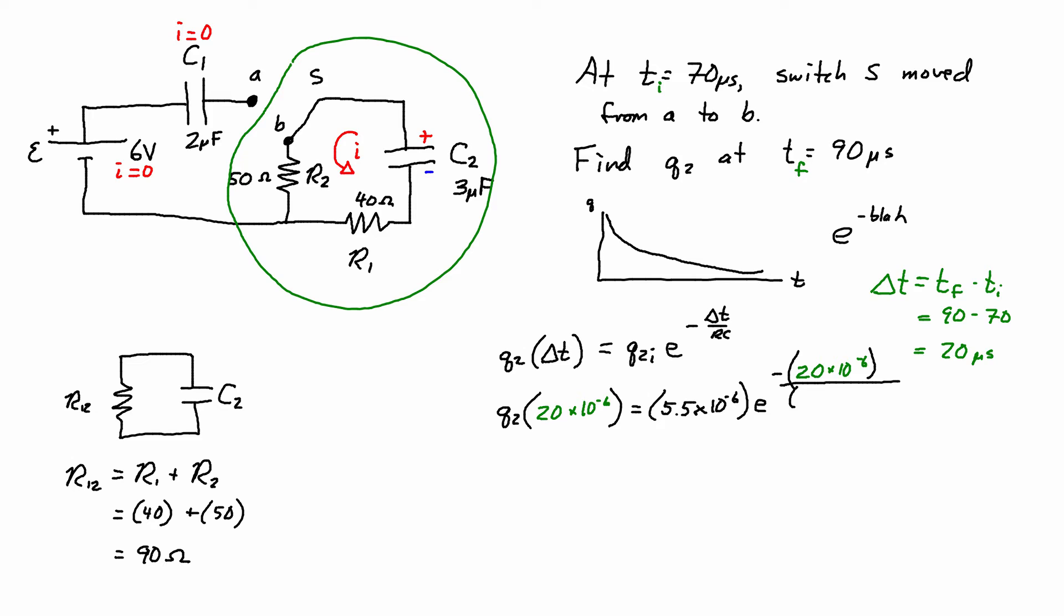Remember for the resistance this equation counts on using the equivalent resistance so I have to use 90 ohms when I'm substituting in for the resistance value but because there's only one capacitor C2 I can use the capacitance for C2 as the capacitor.